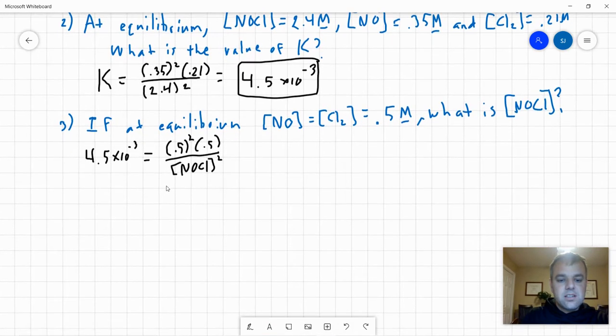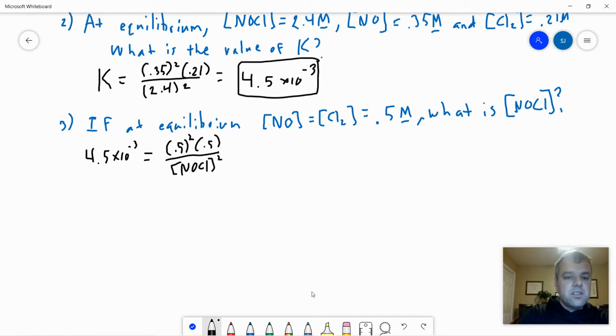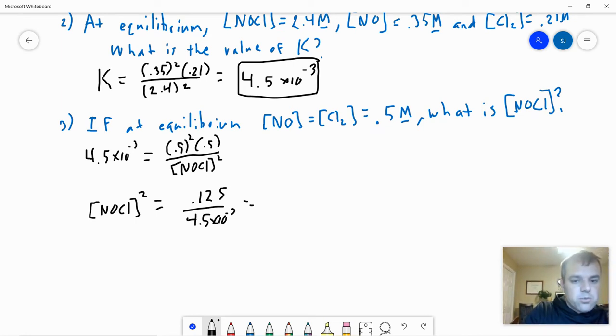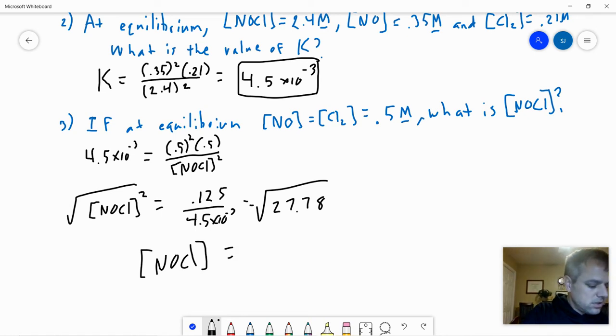So in order to solve that we're going to need to do a little bit of manipulation. So we get NOCl squared equals, that's going to be 0.5 to the third power, which is 0.125 over 4.5 times 10 to the negative third, which is 27.78. And then we need to take the square root of that. So the concentration of NOCl equals square root of that, which is 5.3 molar.